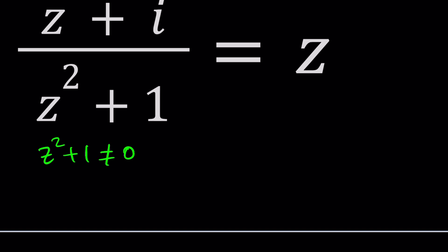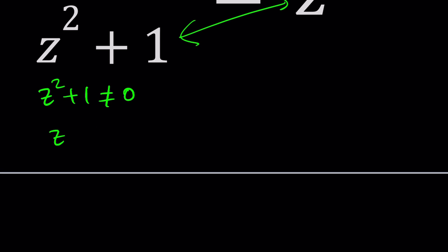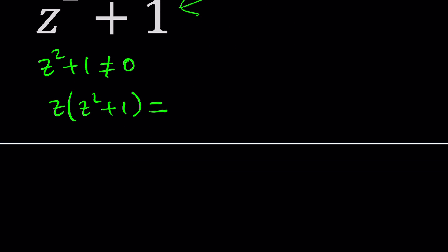Now the second thing we can do is cross multiply. Let's multiply z by z squared plus one and that equals z plus i. Now let's distribute: z cubed plus z equals z plus i. Well that was nice, because in this case z cancels out and when z cancels out you end up with z cubed equals i.